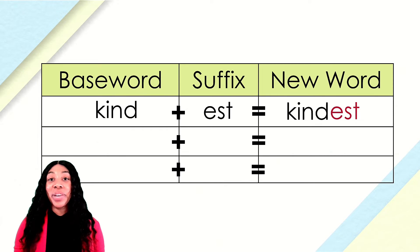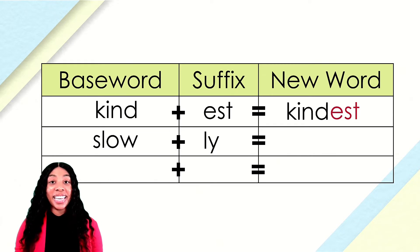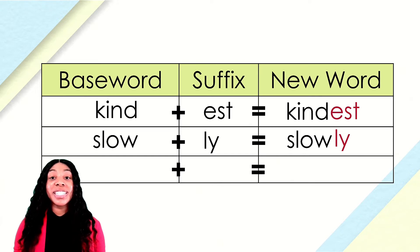Here's our next word. We have the base word slow together with the suffix ly. If we put the base word slow with the suffix ly, what new word do we make? Slowly. How does the suffix ly change the meaning of the base word slow? Slowly describes someone that acts or moves in a slow way. Go ahead and write down the word slowly on your paper.